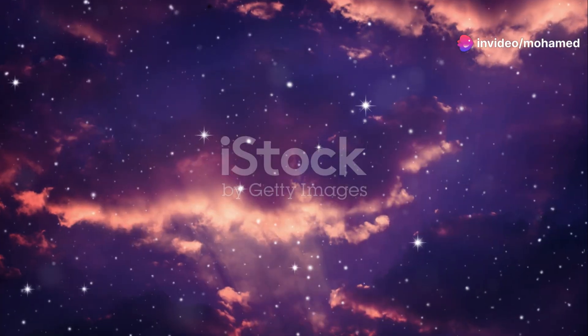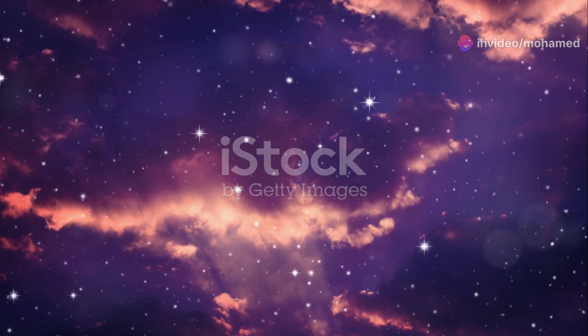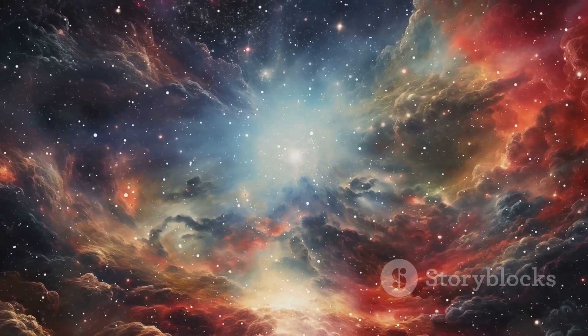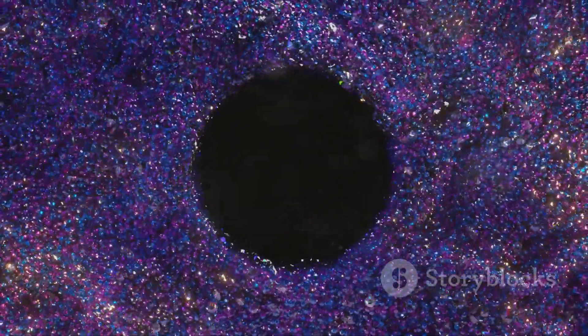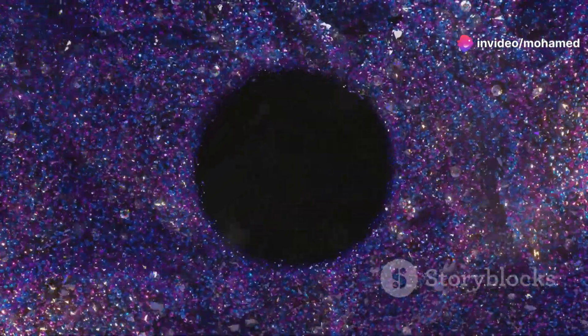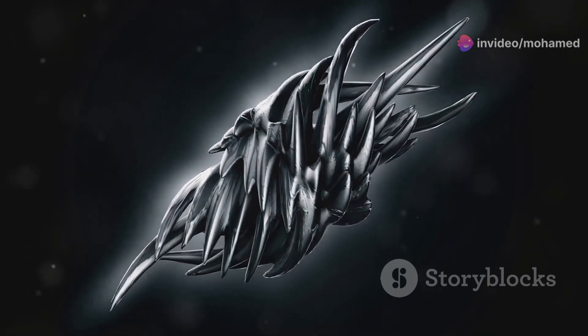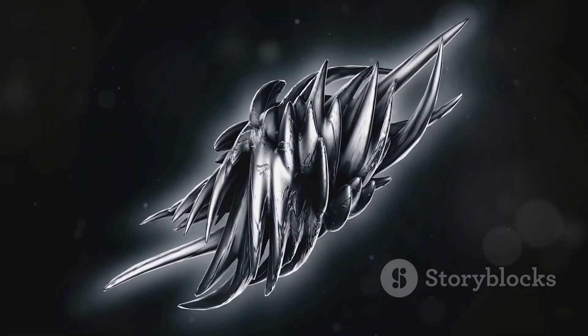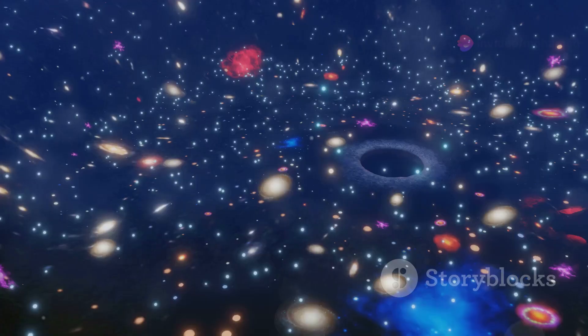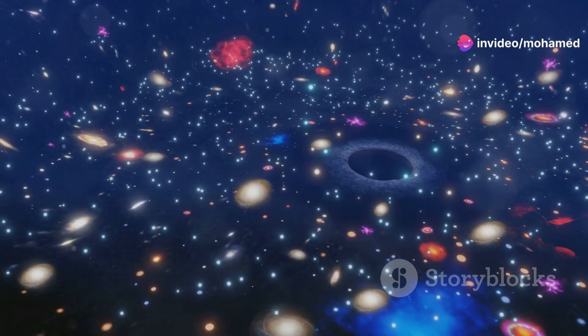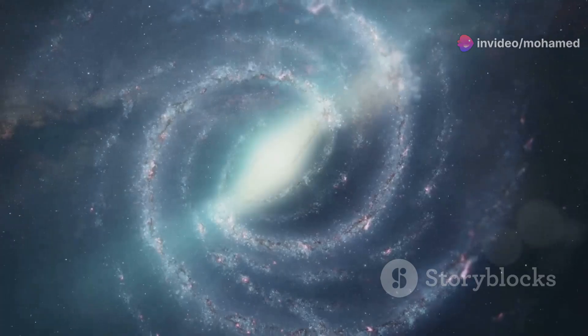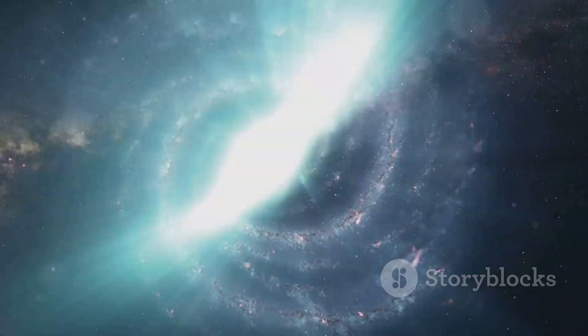When we look at the universe, we see stars, galaxies, and nebulae. However, what we see is only a tiny fraction of the total cosmic content. Most of the universe is composed of dark matter and dark energy, elusive components that defy direct observation. Dark matter, which makes up about 27% of the universe, cannot be seen directly because it doesn't emit, absorb, or reflect light. Instead, its presence is inferred through its gravitational effects on visible matter. Without dark matter, galaxies would not have the mass necessary to hold themselves together.